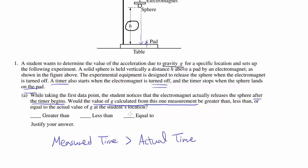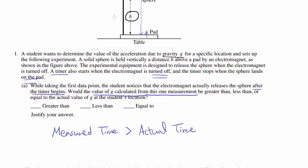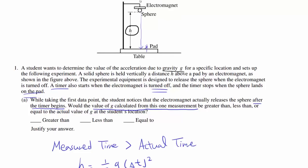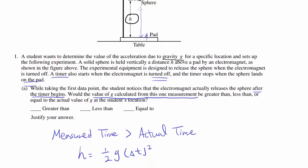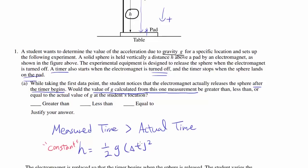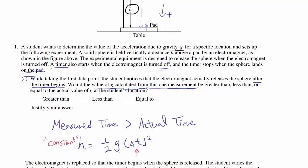How will this affect the value of g calculated from this experiment? We know that the vertical distance traveled by the sphere should be H = 1/2 g delta t squared. Since the height is constant for this experiment, if delta t increases, then the measured value of g should decrease to compensate for the increase in time. So g should be less than the actual value.